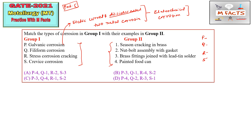Galvanic corrosion happens because of the potential difference developed in the corrosion medium. The less resistant metal acts as the anode and the more resistant metal acts as the cathode. For galvanic corrosion, an example is brass fittings joined with lead-tin solder — that is Cu-Zn joined with Pb-Sn — dissimilar metals. So we match P (galvanic corrosion) with 3.